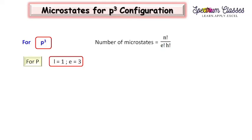Hello everyone, welcome back to Spectrum Classes. In this video I am going to discuss the microstates and calculation of term symbols for p³ configuration. This p³ configuration has three equivalent electrons, so let's look at what important steps we need to consider while calculating the term symbol for this p³ or equivalent electrons.